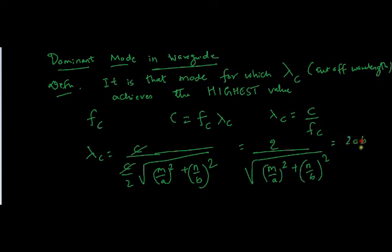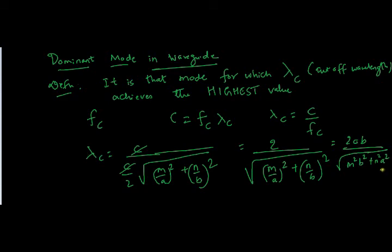Simplifying this term, we get lambda_c equals 2ab divided by the square root of m²b² + n²a². This is the expression for cutoff wavelength in a waveguide.